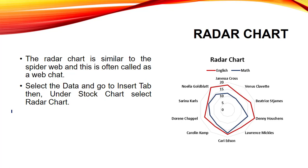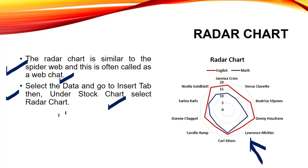Next we have radar chart, which is similar to a spider web. It has multiple axes, and on each axis we have only one data item. These charts are generally used in navigation systems, such as in aircraft for representing coordinates. They are also termed as web charts. To insert it, click on data, go to Insert tab, click on stock chart and then select the radar chart option.